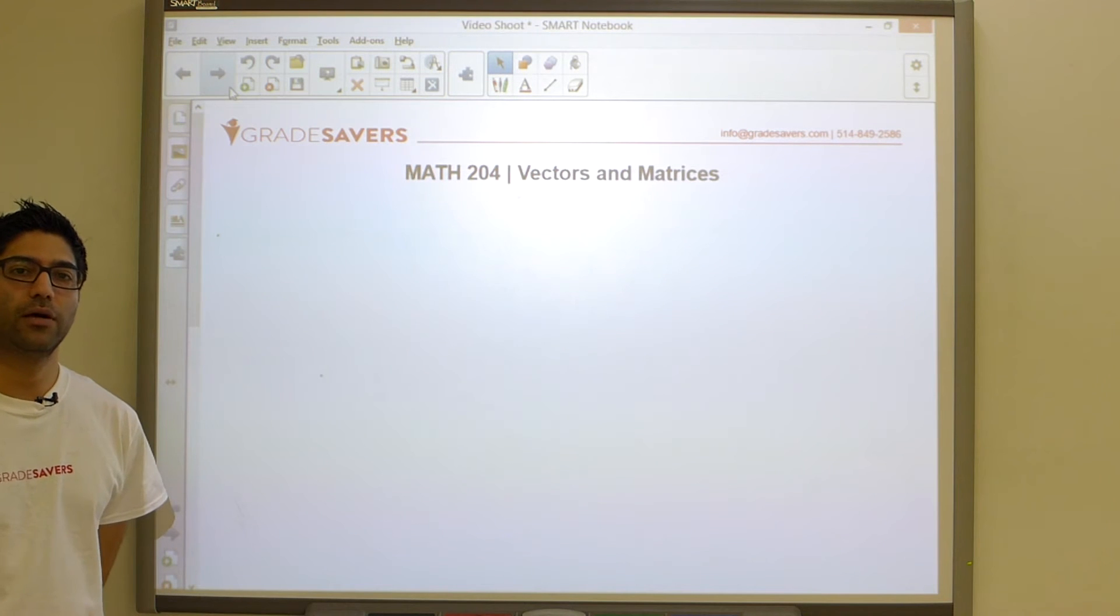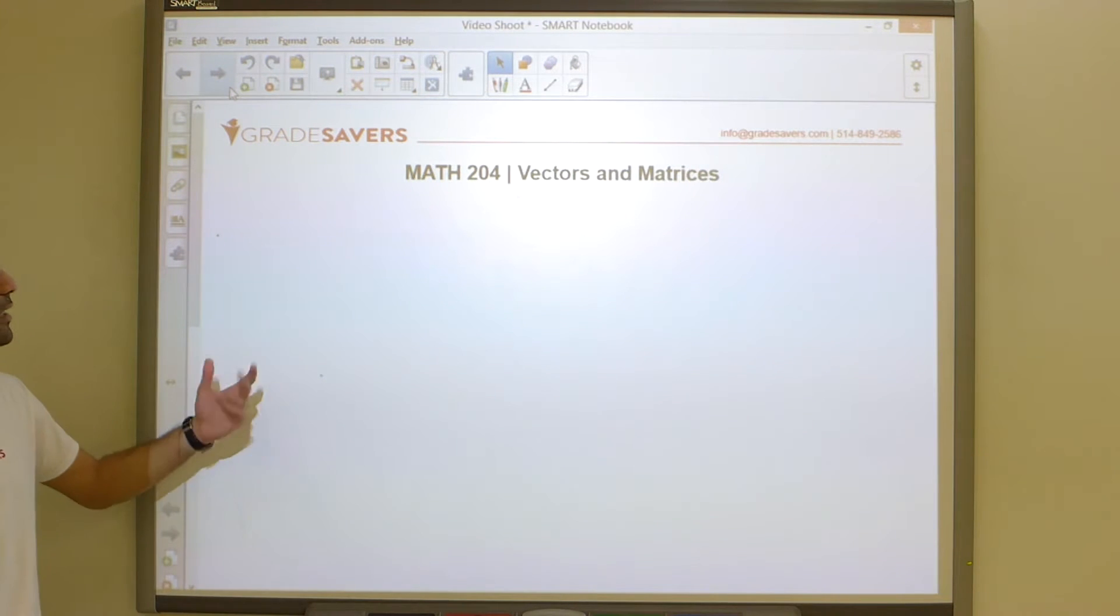Alright guys, so now that we know how to take 2x2 and 3x3 determinants, let's take a look at larger ones and how to attack those.